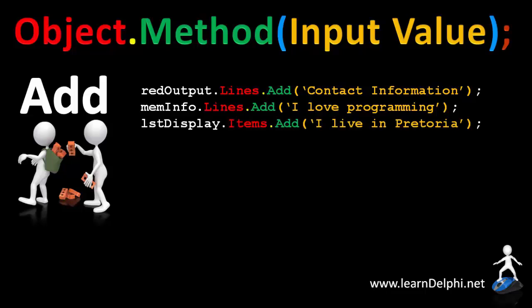A listbox object has an items property. Like the lines for memos and rich edits, you also add the string to the items property of a listbox. This statement takes the phrase 'I live in Pretoria' and adds it to the items property of a listbox object named LST display.